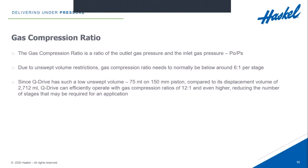The Q-Drive, as mentioned, has a very low unswept volume. On our 150 mm piston, the unswept volume is only 75 milliliters, while the actual displacement of that piston is 2,712 milliliters. So we have a very small unswept volume compared to the actual displacement. Because of that, the Q-Drive allows gas compression ratios of 12 to one and even higher. With higher gas compression ratios allowed, we can get away with fewer stages, which means less hardware is required to get gas from a low pressure to a very high pressure.